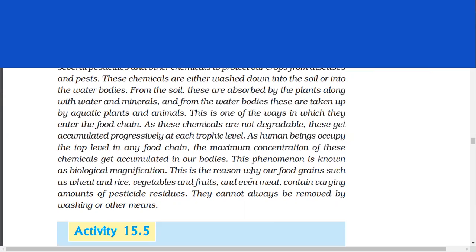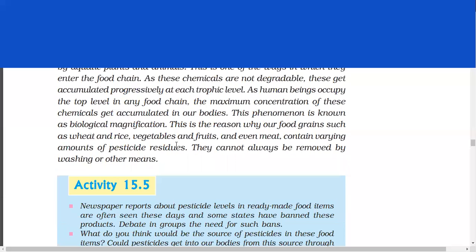As human beings occupy the top level in any food chain, the maximum concentration of these chemicals get accumulated in our bodies. This phenomenon is known as biological magnification. This is the reason why our food grains such as wheat and rice, vegetables and fruits and even meat contain varying amounts of pesticide residues. They cannot always be removed by washing or other means.